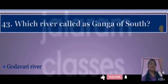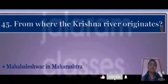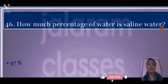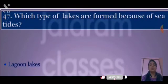Which river is known as the Tsangpo in Tibet? Answer: Brahmaputra. Which river is called the Ganga of the South? Answer: Godavari River. What is the length of the Godavari River? Answer: 1465 kilometers. From where does the Krishna River originate? Answer: Mahabaleshwar in Maharashtra. What percentage of Earth's water is salt water? Answer: 97%.